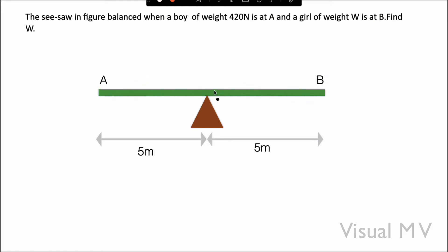Let us solve some questions related to this concept. The seesaw in the figure balances when a boy of weight 420 Newton is at A and a girl of weight W is at B. Find W.